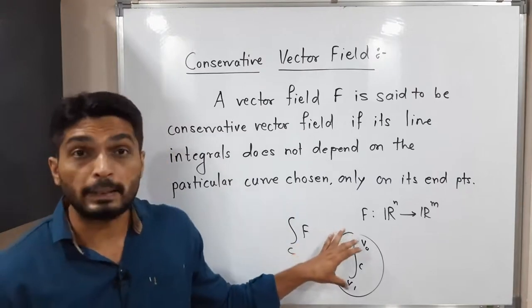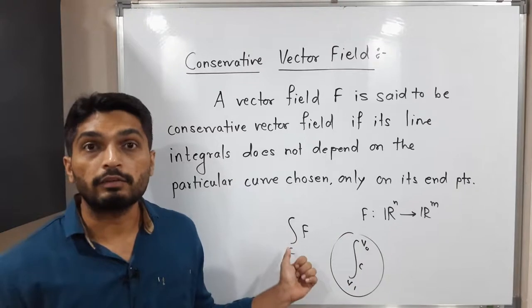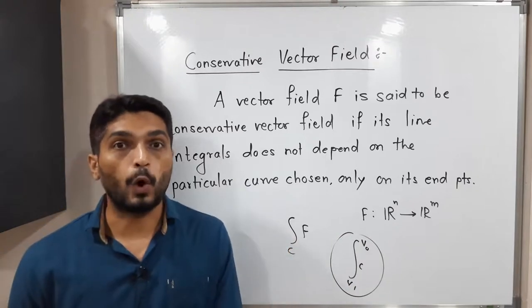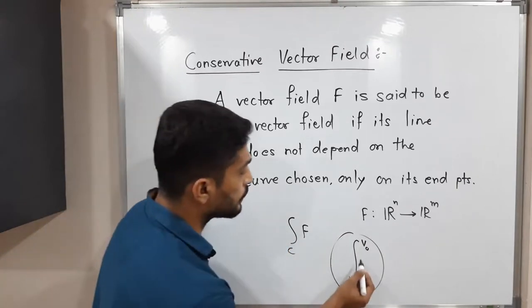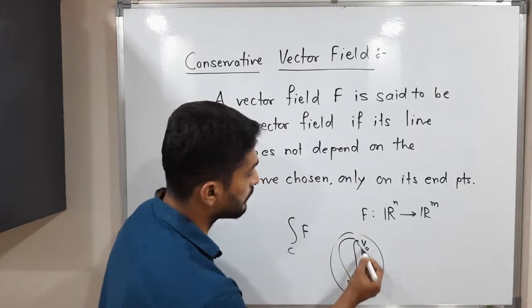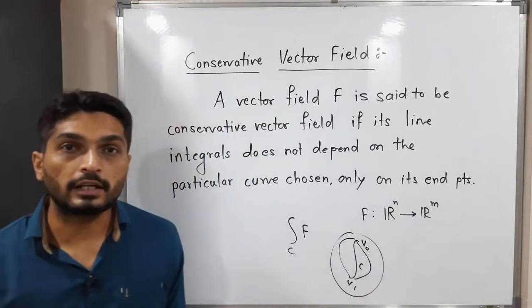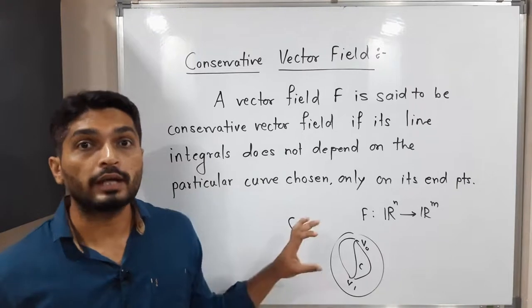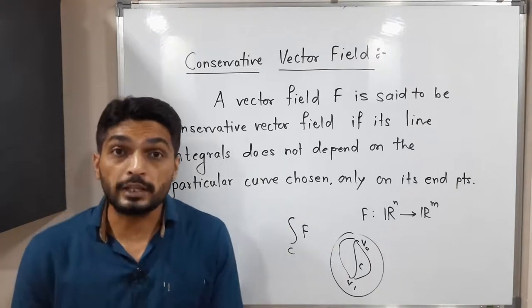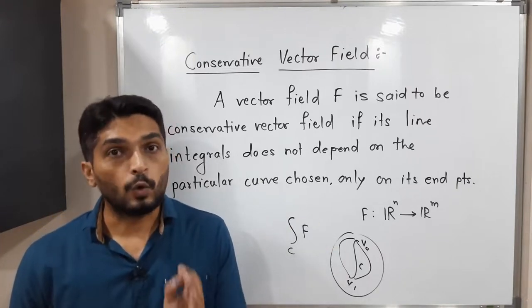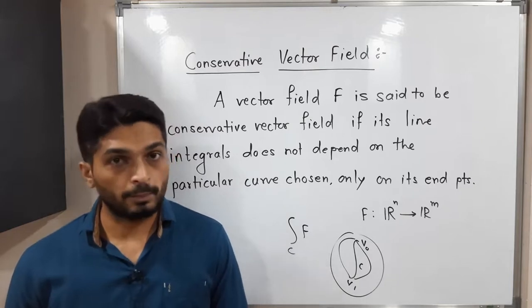The value of line integral will not depend on the curve - that means if you follow this curve or that curve, the value of line integral will remain same and it depends only on endpoints. Such vector fields are said to be conservative vector fields. Make a screenshot of it.